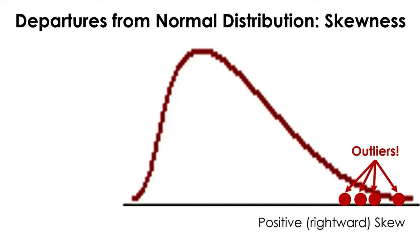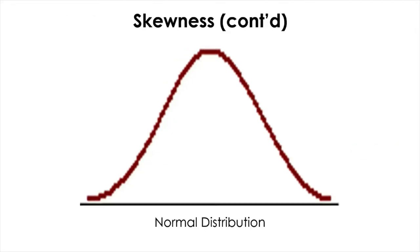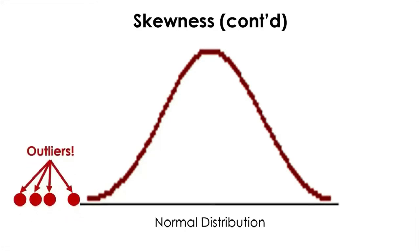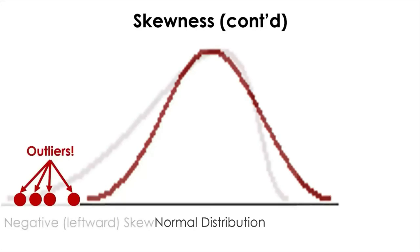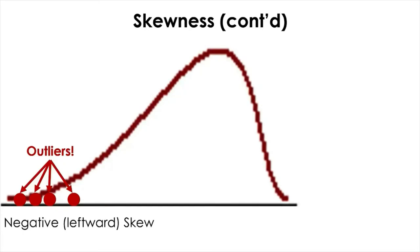As we can see, the distribution is pulled to the right because of the influence from the outliers. On the other hand, when the outliers are on the left of the distribution, then this distribution has a negative skew or is said to be skewed to the left. And as you can see, the distribution is pulled to the left when there are outliers on the left side of the distribution.